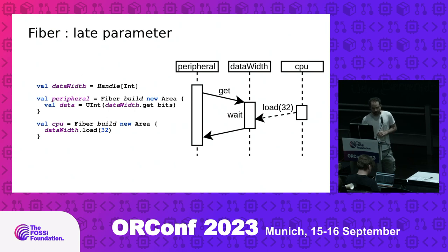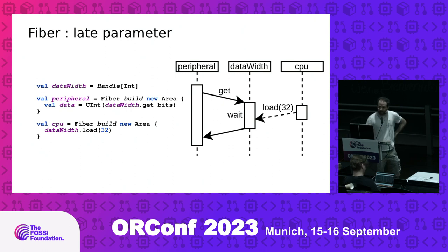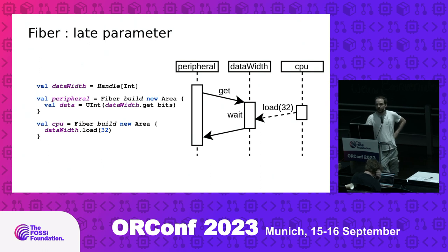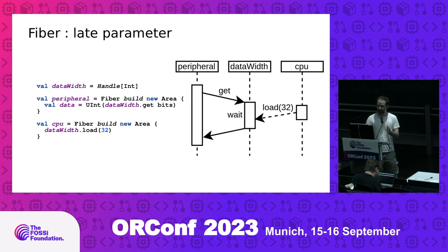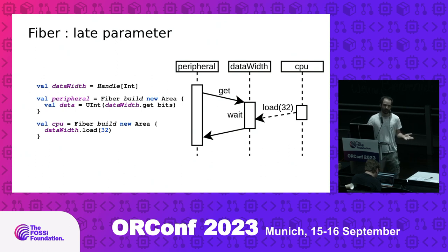I will give some dummy examples — not fully representative, but just to get the concept. Imagine you have a peripheral, and you will elaborate the peripheral hardware in its own fiber — so its own elaboration thread. To elaborate the peripheral hardware, we will define our data signals, which will be our own side of data-width bits. The thing is, data-width bits will be a parameter which will be propagated from another fiber. So data-width is a handle, and if you access it and it's not loaded with any value yet, this code will block the execution of this fiber. Then another fiber — like the CPU — will say, by the way, data-width will be 32. So it's a kind of simple parameter propagation.